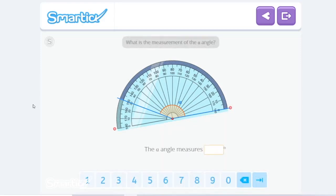What is the measurement of the alpha angle? The alpha angle measures, from 0 all the way to 150. That's it! The alpha angle measures 150 degrees.